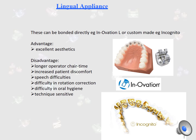There are two types of lingual appliances: In-Ovation, which can be bonded directly, and Incognito, which is custom-made in the lab before being cemented in the patient's mouth. Excellent aesthetics are the main advantage of lingual appliances. However, since braces are placed at the lingual surface of the tooth, disadvantages include longer operator chair-side time, increased patient discomfort, speech difficulty, difficulty in rotation correction, difficulty in oral hygiene maintenance, and the technique is sensitive.